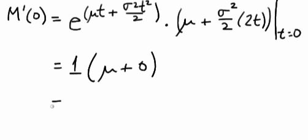So our first derivative with respect to t, evaluating at t equals 0, we get the mean mu, which is exactly what we were hoping to get.